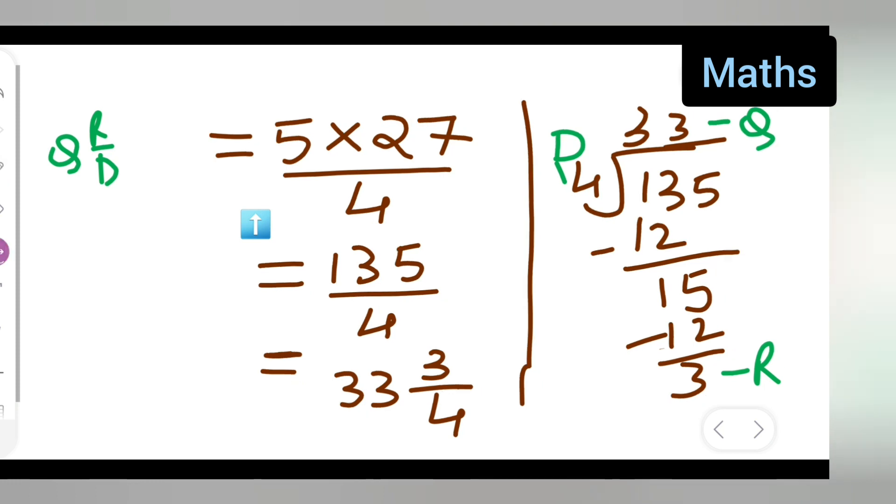So overall, your answer is 33 and 3 upon 4. I hope you have understood how to multiply and express as a mixed fraction. Thanks for watching. If you have any queries or doubts, you can comment below. Don't forget to like, share and subscribe to my channel. You can comment your answer below.